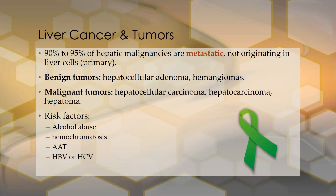90 to 95 percent of hepatic malignancies are metastatic, meaning they do not originate in the liver cells — for example, breast cancer cells that spread into the liver. You can also have benign tumors, called hepatocellular adenomas and hemangiomas, as well as malignant tumors such as hepatocellular carcinoma — also called hepatocarcinoma or hepatoma. So there are many different types of liver cancers and tumors.